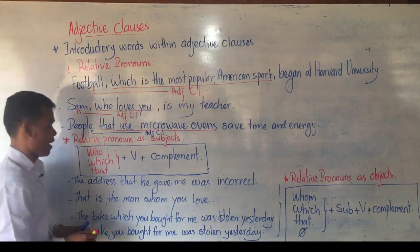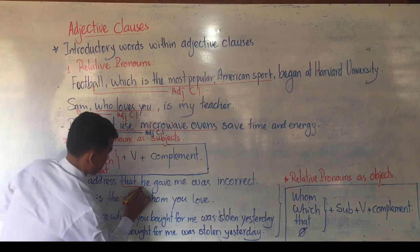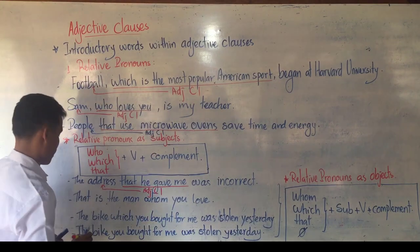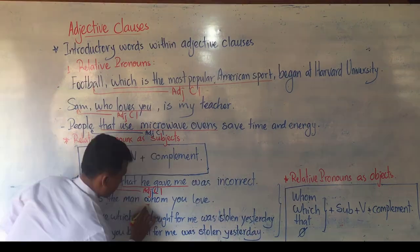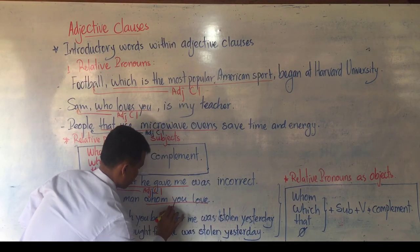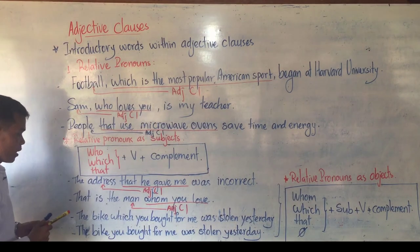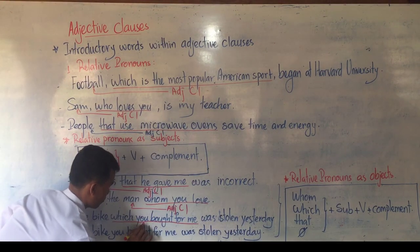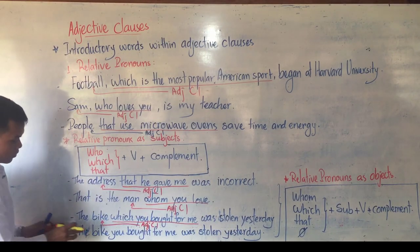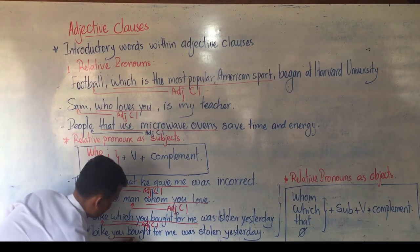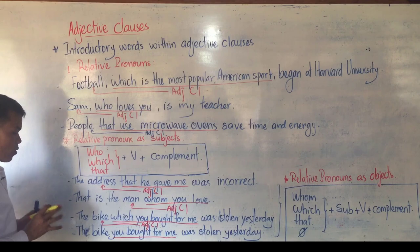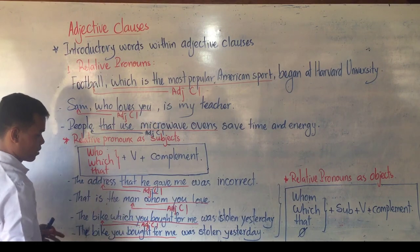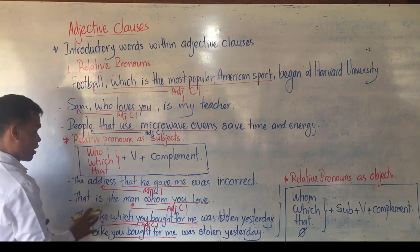One more example: 'The address that he gave me was incorrect.' Here, 'that he gave me' is the adjective clause modifying 'the address.' 'That is the man whom you love.' 'Whom you love' is the adjective clause modifying 'the man.' 'The man which you bought for me was stolen yesterday.' 'Which you bought for me' is the adjective clause. You can also see: 'the address you bought for me' — no need to use a relative pronoun. We still call it an adjective clause because when the relative pronoun functions as the object in a defining clause, it can be left out.